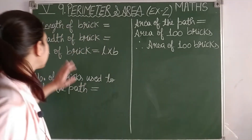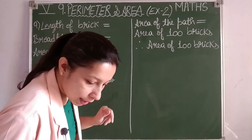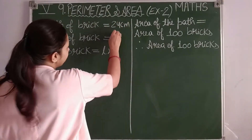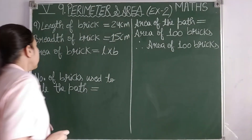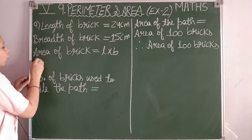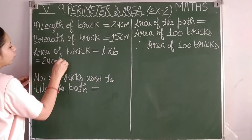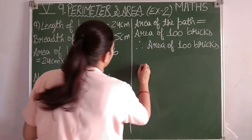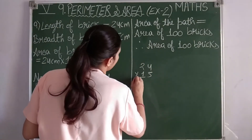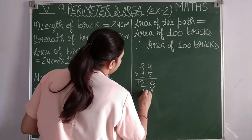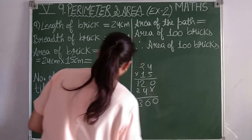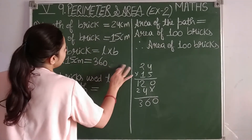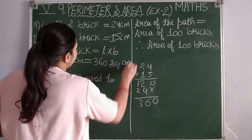Length of brick is 24 centimeters and breadth is 15 centimeters. Area of brick equals 24 centimeters into 15 centimeters.